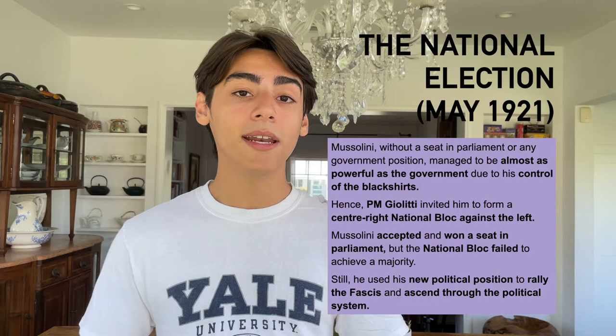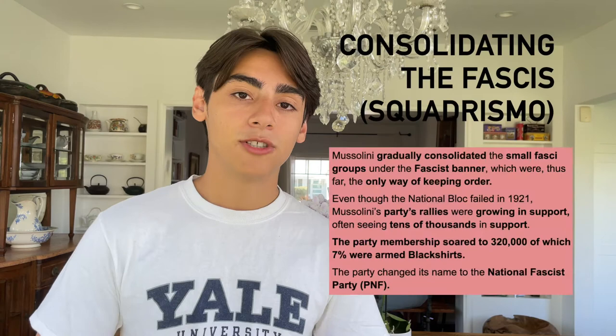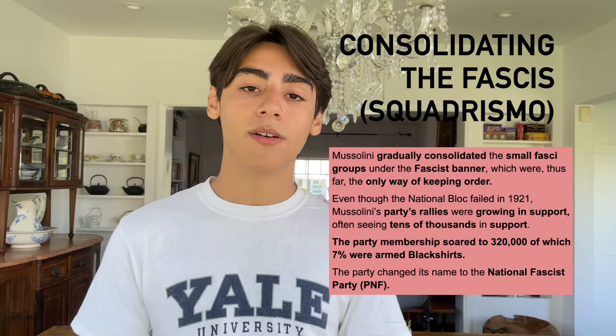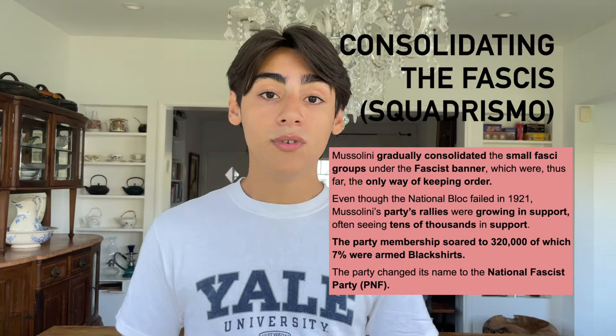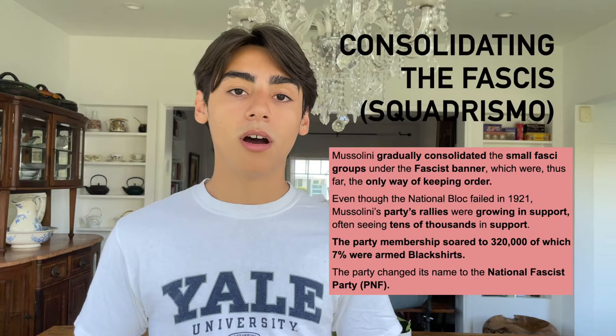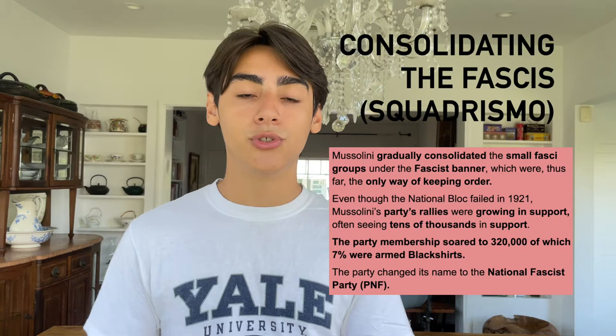Moving on, Mussolini was now a member of parliament, which meant that he could use the political process and political vessels to spread his ideas and consolidate even more support. This leads us to the next factor: Squadrismo, which was the process of consolidating the fascists under the fascist banner. Now being an established politician, Mussolini was able to consolidate the small fascist groups in a much more effective manner. Using speeches, rallies, national movements, and other methods of communication, he was able to unite all of these groups under the fascist banner. Because they were still the only effective way of keeping order in Italian society and streets, Mussolini's power and prestige only grew stronger and stronger.